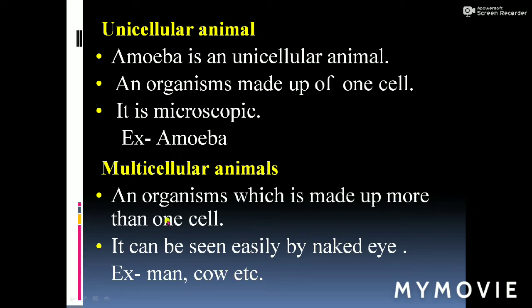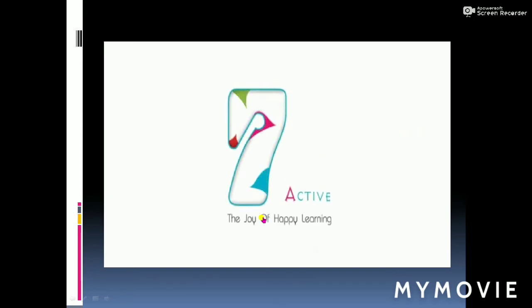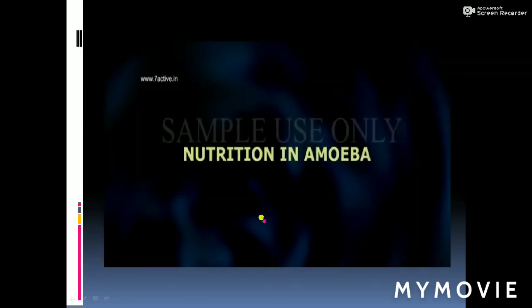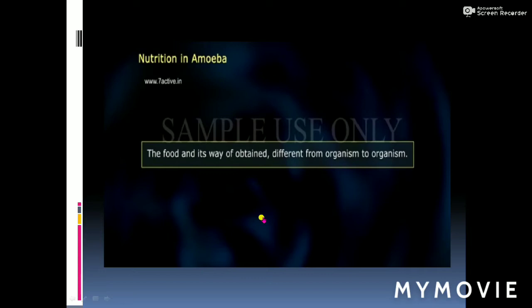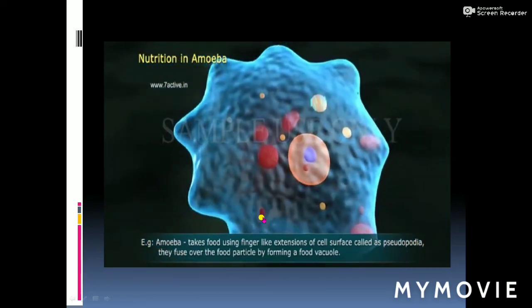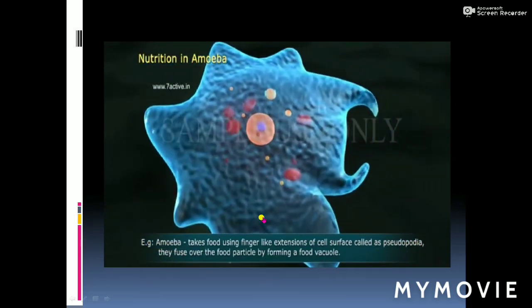Multicellular animals can be seen easily with the naked eye. Examples include man and cow. Even a very small insect surrounding us is multicellular because it can be seen by our naked eye. Now let's look at a video on nutrition in amoeba. The food and the way of obtaining it differs from organism to organism. Amoeba takes food using finger-like extensions of its cell surface called pseudopodia.